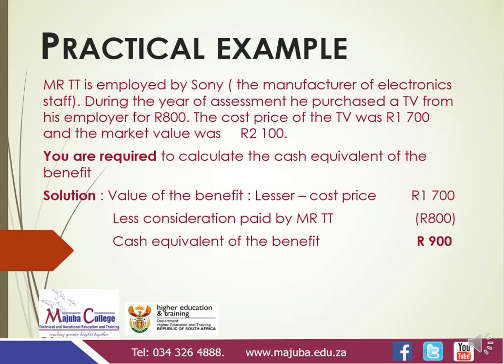We take the cost price of 1,700 less the consideration paid by Mr. TT. The amount paid by Mr. TT for the TV is 800. The difference — 900 — is the taxable benefit as the cash equivalent of the benefit. This one is very simple. Thank you.